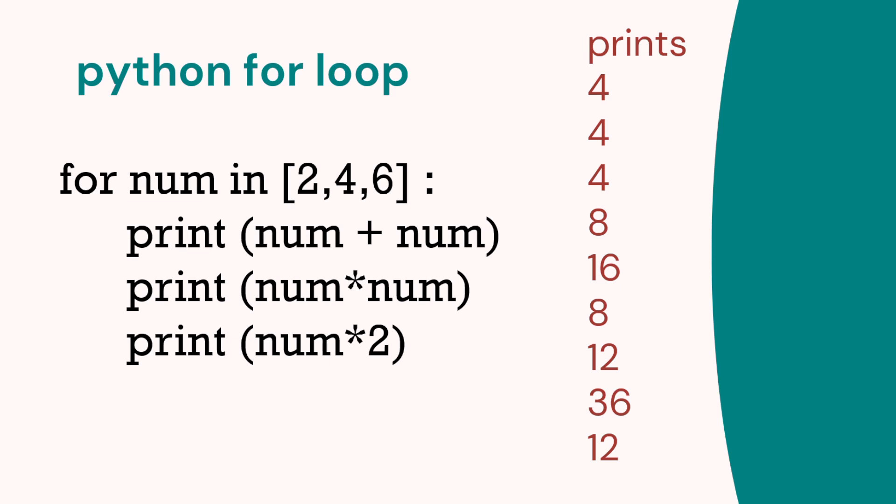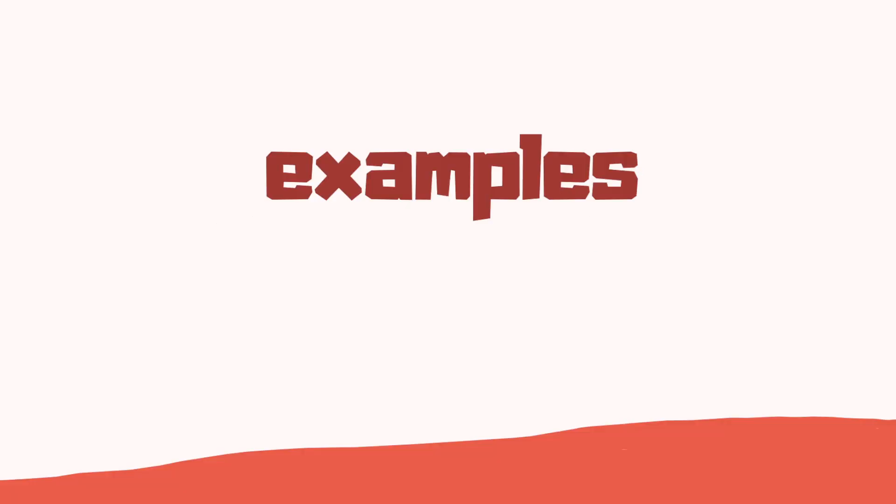So that's our example that prints 2, 4, and 6. In another example we've got three print statements. So we've got number plus number, multiplied number by itself, number times 2. So here we've got 4, 4, 8, 16, 8, 12, 36, 12. You can tell the three print statements are inside a loop because of that indentation. Let's look at some examples.